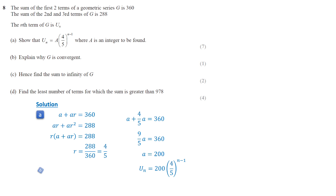This geometric series is convergent because the absolute value of r is less than 1. The formula for the sum to infinity of a geometric sequence is a over 1 minus r. Substituting a equals 200 and r equals 4 over 5, the sum to infinity is 1000.